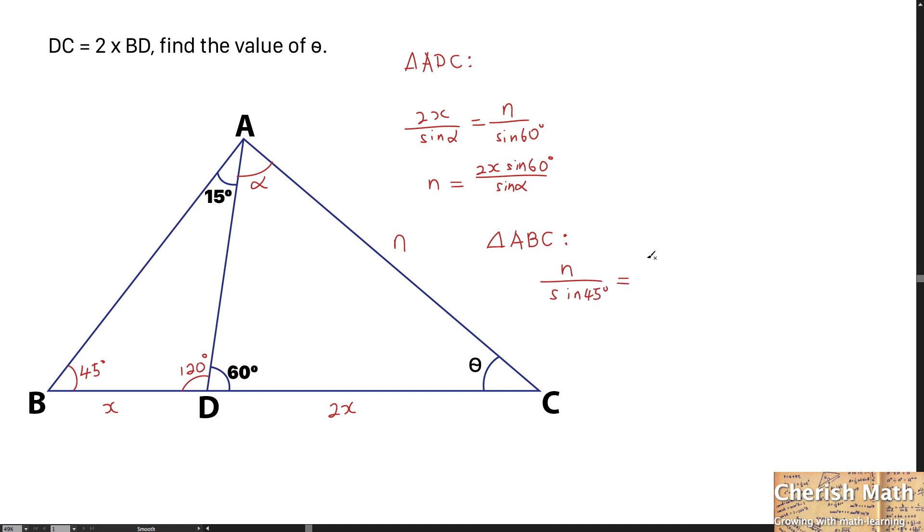This equals the sum of the lengths X and 2X, which is the entire length of BC. We get 3X divided by the angle here, which is the sum of 15 degrees and alpha.